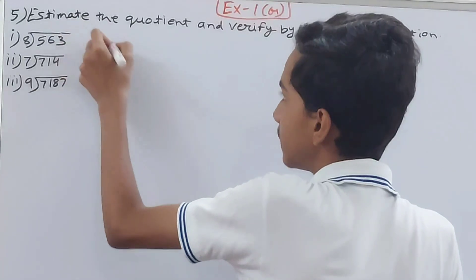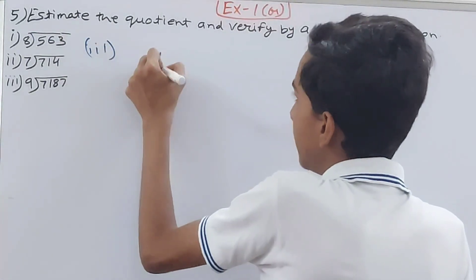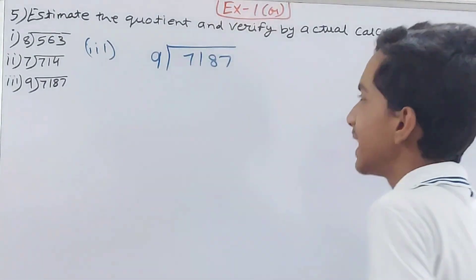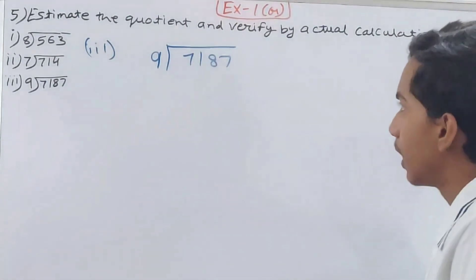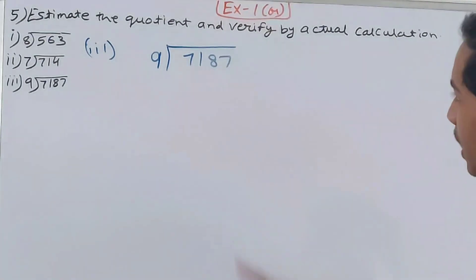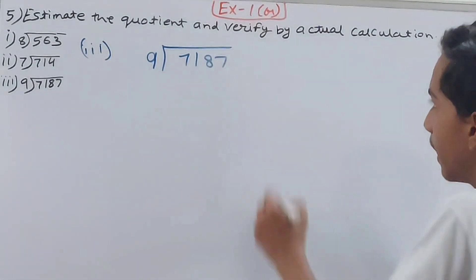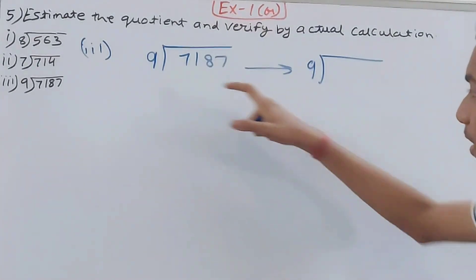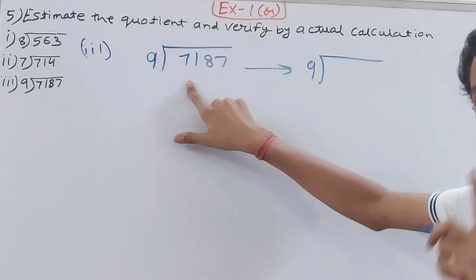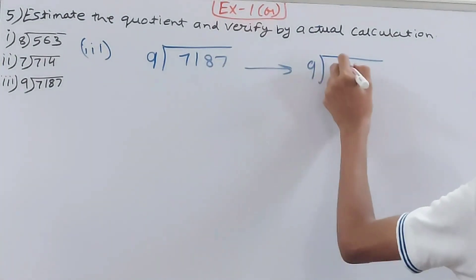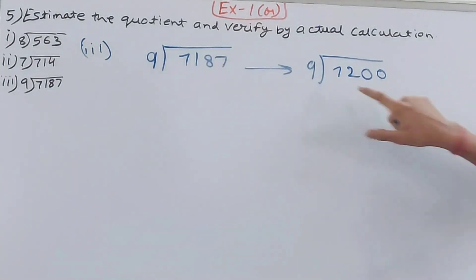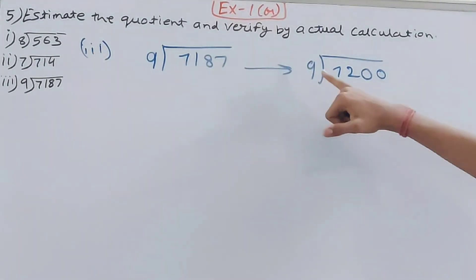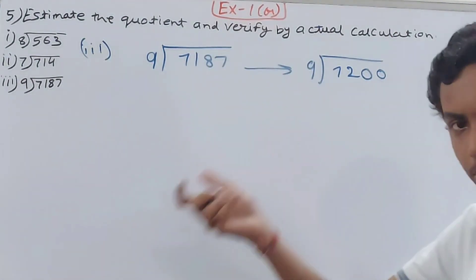The third part: 7187 ÷ 9. We can estimate 7187 as 7200 because 9 into 8 is 72, and the two zeros don't matter. So estimated is 7200 ÷ 9.